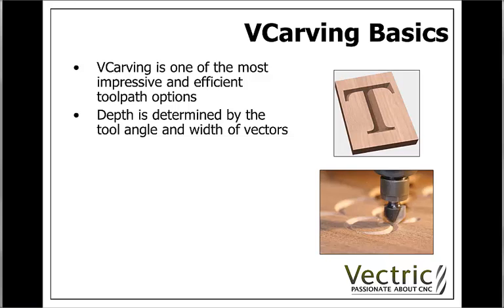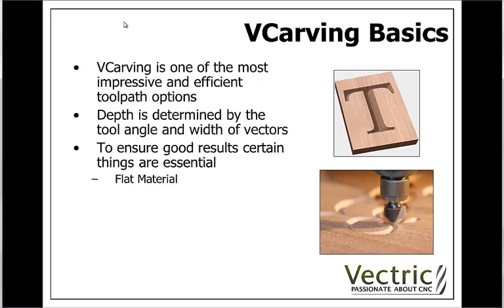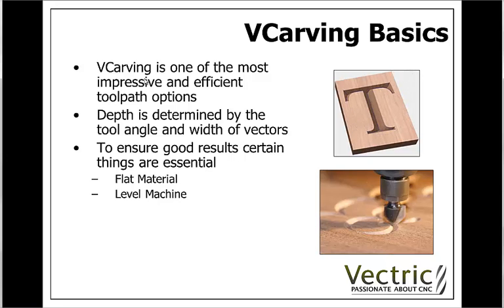There are a number of things that it's important to be aware of if you want to get good results for VCarving, and many of these are specifically to do with things on the machine itself. The first of these is that you need to ensure that you have nice flat material. Related to this is having a level machine. If you don't have a level machine and flat material then you're not going to consistently have the tip of the tool lifting out of the material at the right place, and therefore you won't achieve the nice sharp corners that really set off a good quality VCarving.